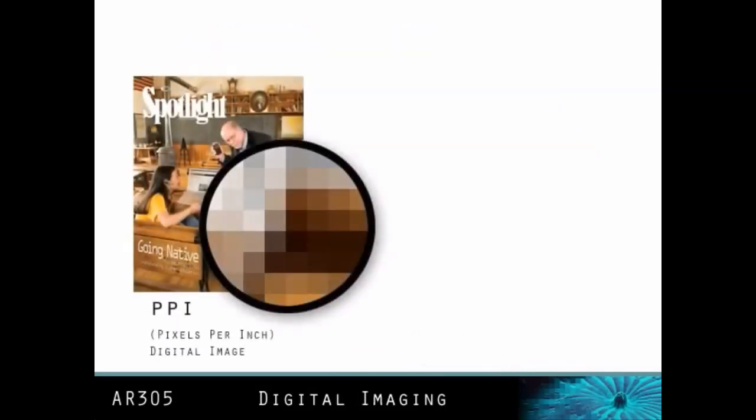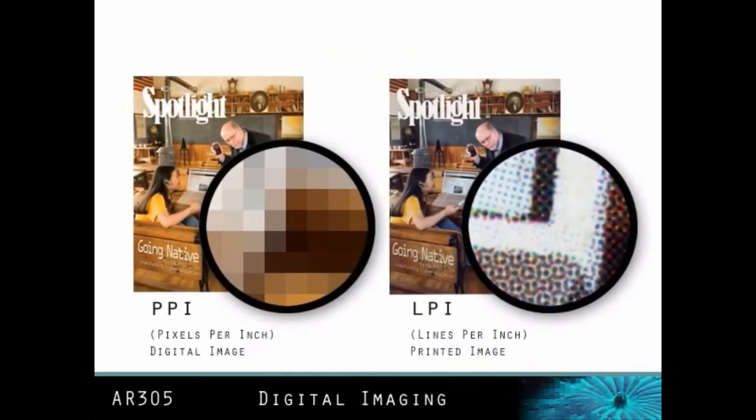We can also compare the original digital photograph. This digital image is actually made up of pixels. The resolution of a Photoshop image is correctly referred to as PPI, or pixels per inch, compared to the final product, which is made up of halftone dots that are correctly referred to as LPI, or lines per inch.